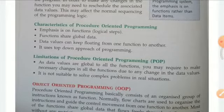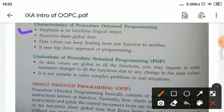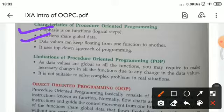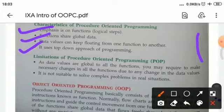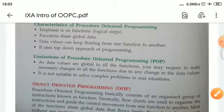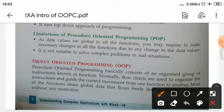The characteristics of processor-oriented programming are: emphasis on functions, global data values keep floating from function to function as seen in the diagram, and it uses a top-down programming approach. However, there are some limitations of this language.